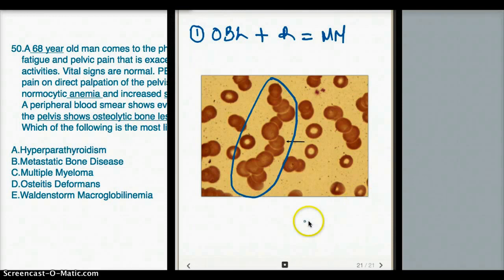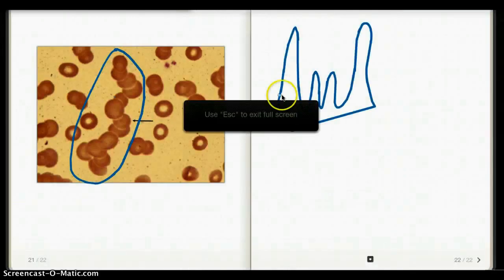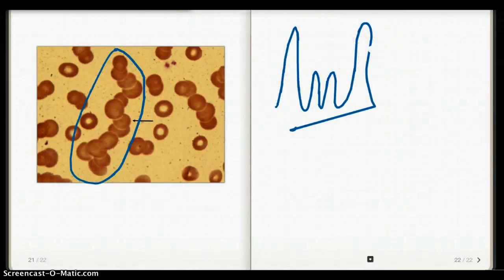Now, what are some of the other things that we see with multiple myeloma? We see that there is an M spike. We see an M spike.